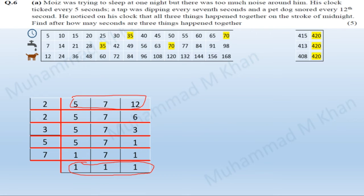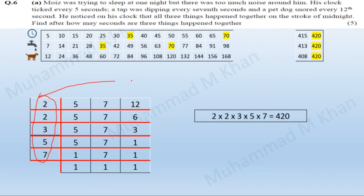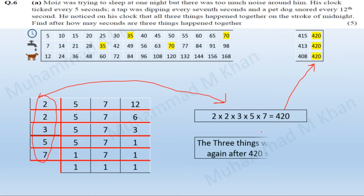Once we have done that, we are in a position to find the least common multiple. The numbers on the left-hand side — their product will give us the LCM. Multiplying 2 × 2 × 3 × 5 × 7 gives us 420, which is the least common multiple of 5, 7, and 12. So in the language of the question, the three things will happen together after 420 seconds.